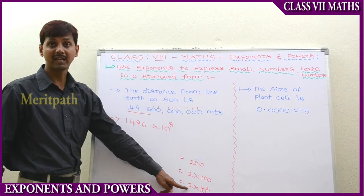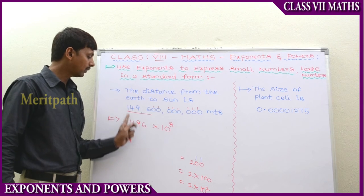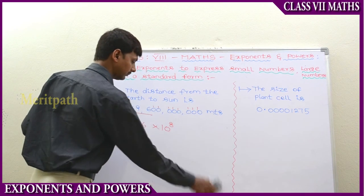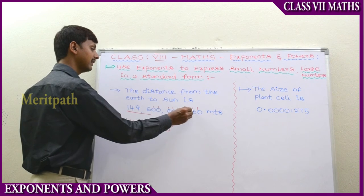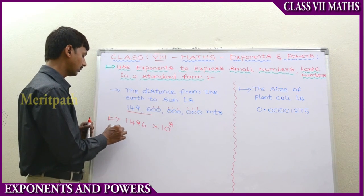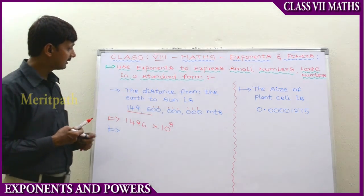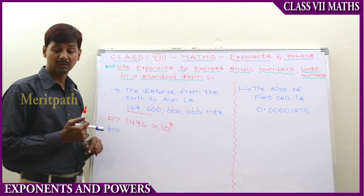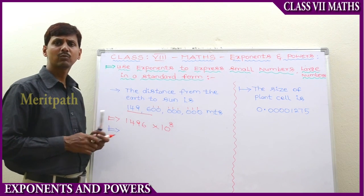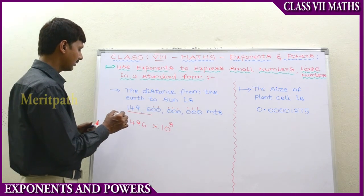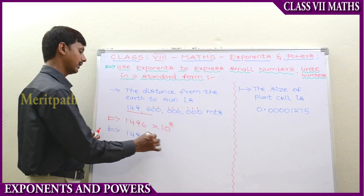Using this expanded form, we write the power behind the base. So 1496 into 10 to the power of 8. Now this is the largest number — it looks very large. To make it a smaller representation, let's take a decimal place here. We write 1496.0 into 10 to the power of 8, which is nothing but 1496, so we can place the decimal.